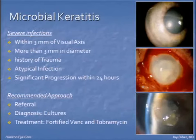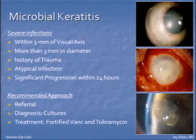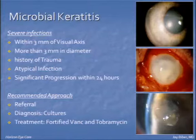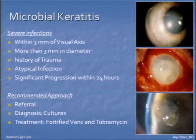However, for severe infections — if they're within three millimeters of the visual axis, greater than three millimeters in size, or the patient has a history of trauma or atypical infection, or if you're monitoring a mild infection that's not responding to treatment — for these patients, you want to go ahead and culture, identify the organism, and treat with fortified antibiotics. I like to use vancomycin and an aminoglycoside.